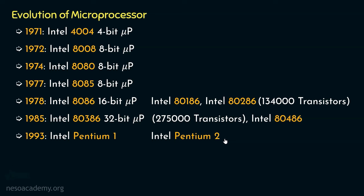The 7.5 million transistor Intel Pentium 2 microprocessor, introduced in 1997, was specifically designed to process audio, video, and graphics data efficiently. Then in 1999, came the Intel Pentium 3 processor with 9.5 million transistors, designed for advanced imaging, 3D, streaming audio, video, and speech recognition.